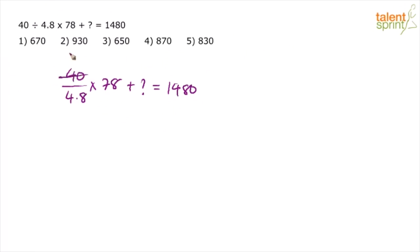Notice that 4 into 10 gives 40, and 4 into 1.2 gives 4.8, since 4 into 12 is 48. So 4.8 is 4 into 1.2, meaning the expression becomes 10 by 1.2 into 78. You can skip the decimal by multiplying both numerator and denominator by 100, giving 100 by 12 into 78.